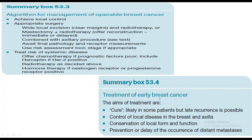Hormone therapy should be given if estrogen receptor or progesterone receptor is positive. The aims of treatment for early breast cancer are: cure is likely in some patients but late recurrence is possible even in early stages; control of local disease; conservation of local form and function; and prevention or delay of distant metastasis.